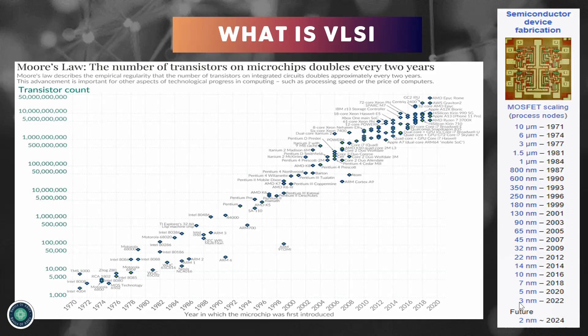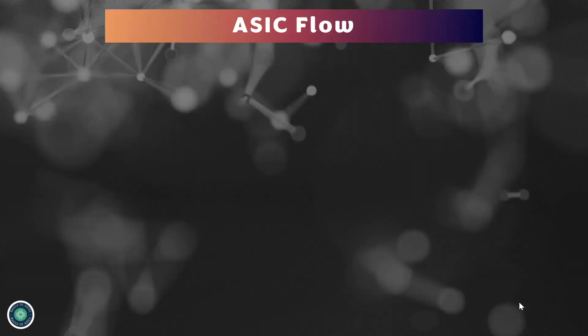Designing these tiny chips containing complex circuitry with billions of transistors is not a simple job, nor is it a one-step process. It is done in several steps, and the process is called ASIC flow, also known as VLSI flow or RTL to GDS flow. Let's see what the steps involved in creating these tiny yet powerful chips look like.